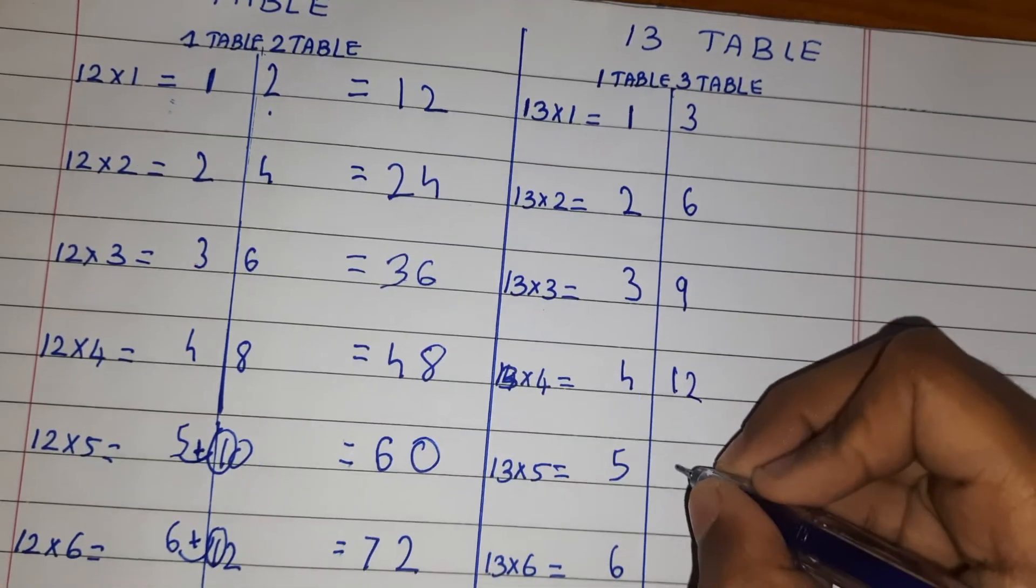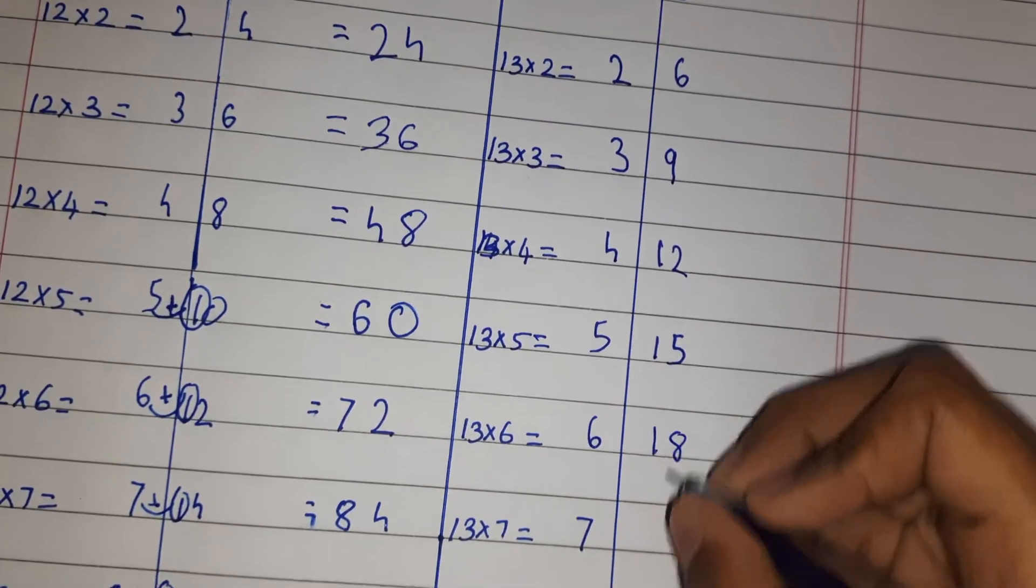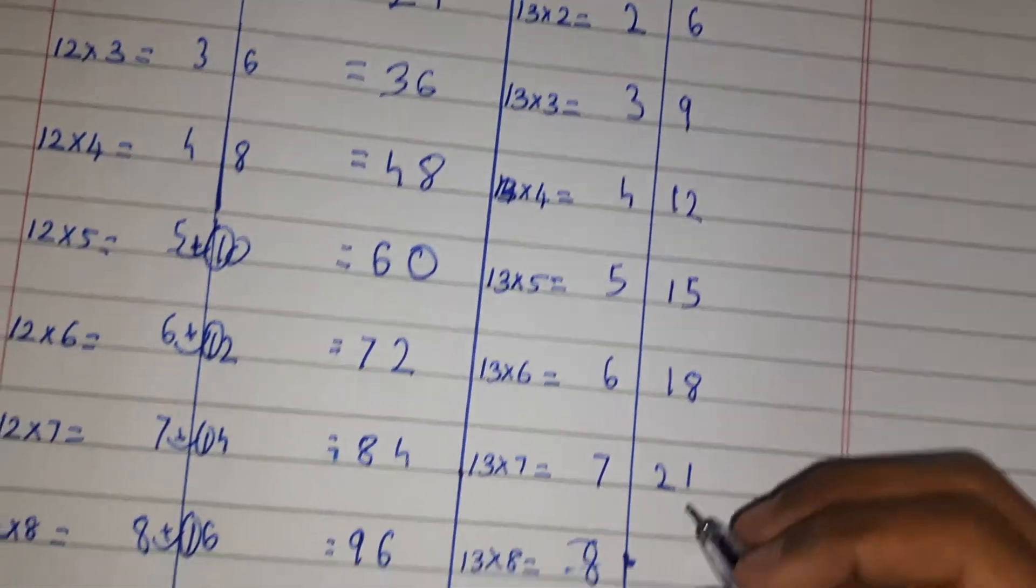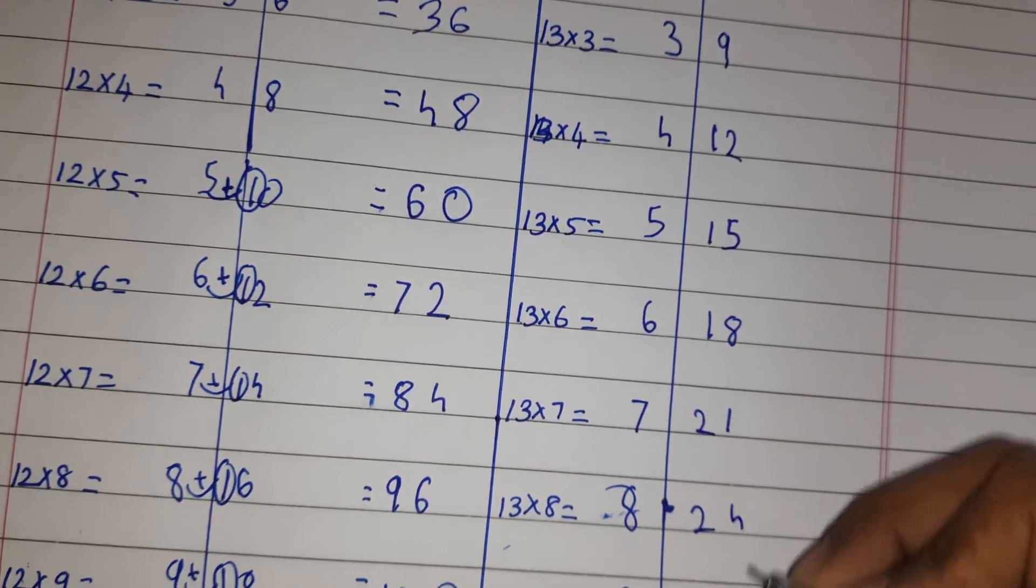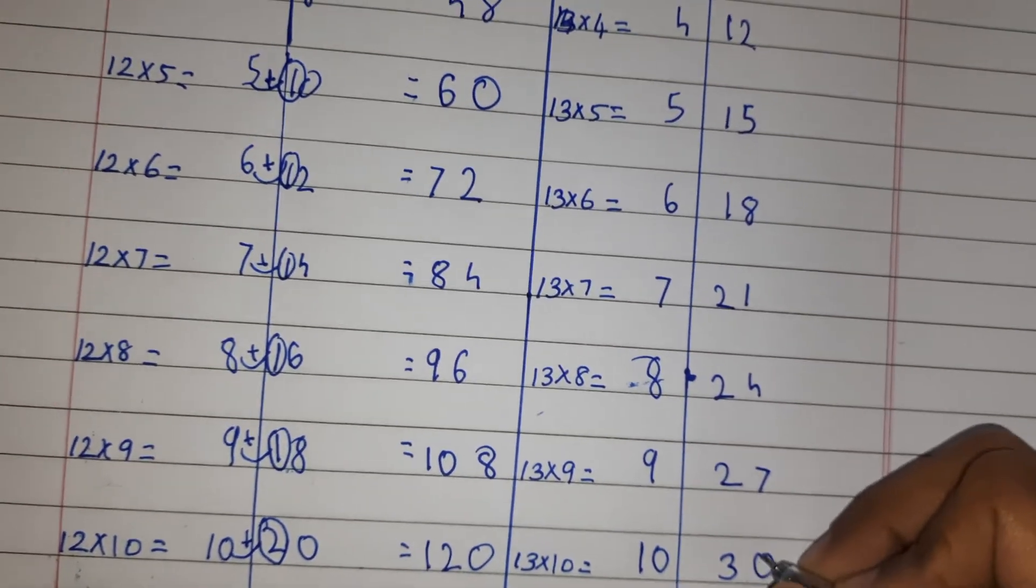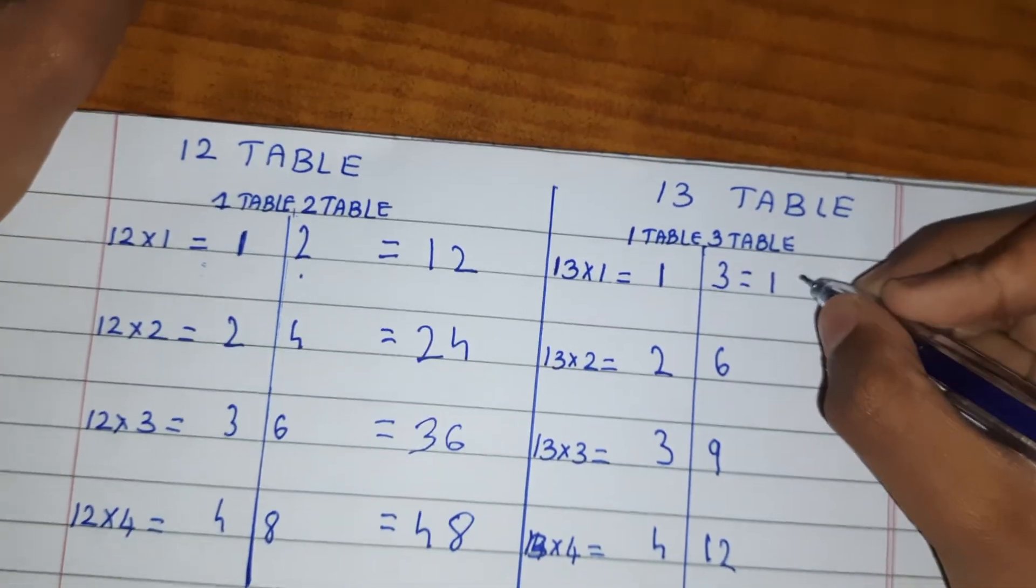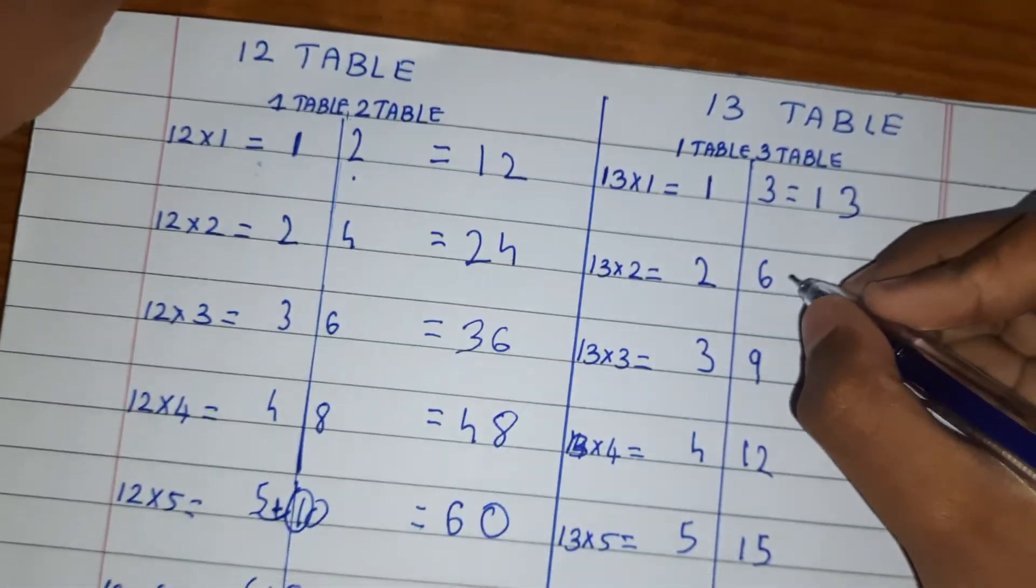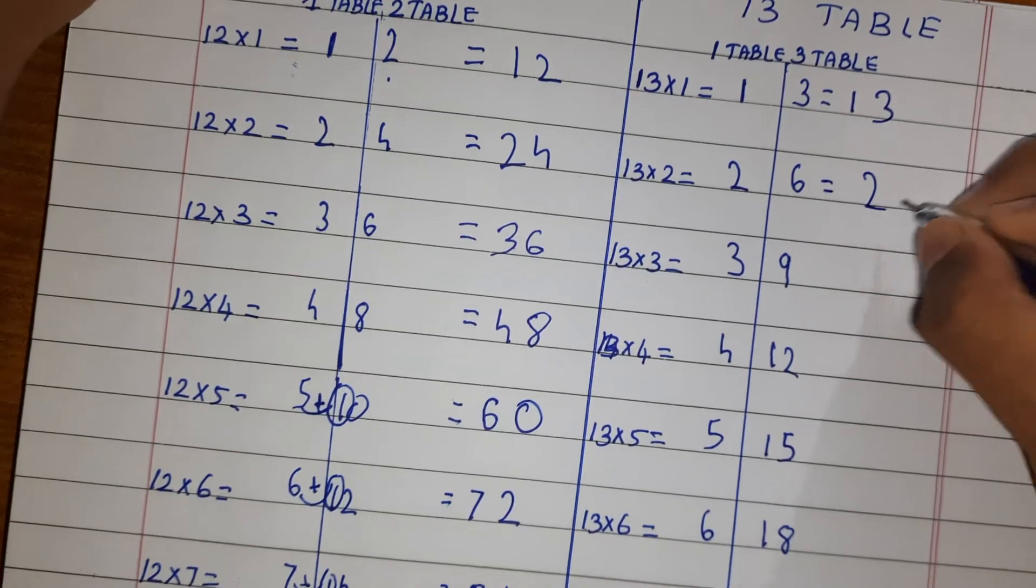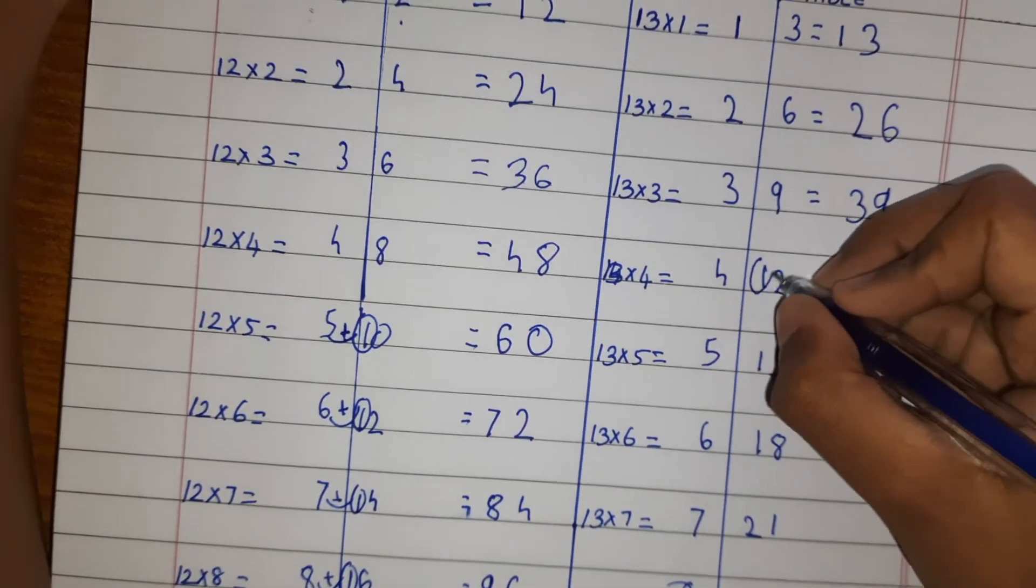Now let's try three table: three, six, nine, twelve, fifteen, eighteen, twenty-one, twenty-four, twenty-seven, and thirty.